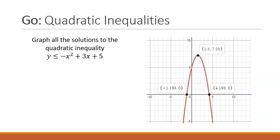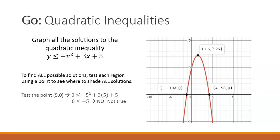We are asked to graph all of the solutions to the quadratic inequality. To find all possible solutions test each region using a point to see where to shade all solutions. If I test the point 5 comma 0 and I plug that into my quadratic inequality I see that I get 0 is less than or equal to negative 5 but that is not true.